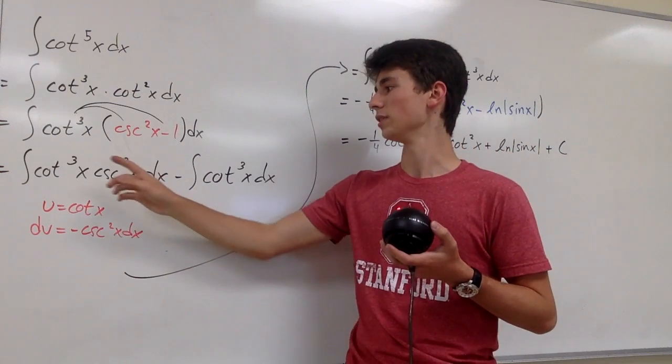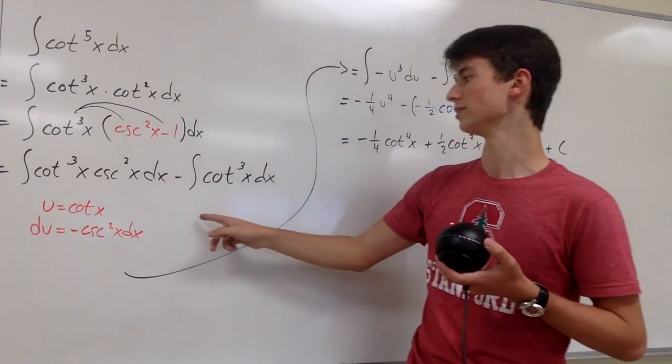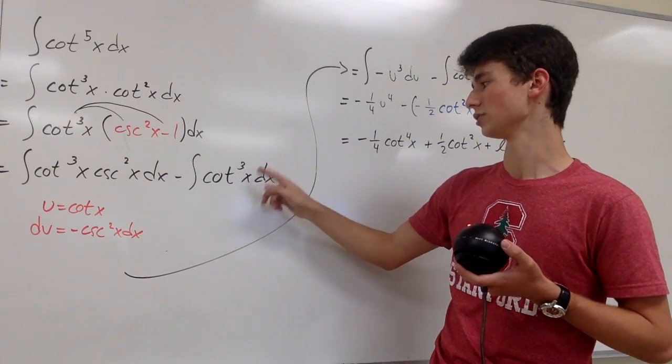So what we end up with is cotangent cubed of x times cosecant squared of x dx minus the integral of cotangent cubed of x.